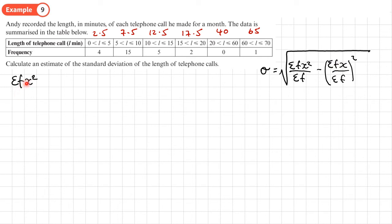Let's start with sum of FX². That's the sum of each frequency times the midpoint squared. So 4 × 2.5² + 15 × 7.5² + 5 × 12.5² + 2 × 17.5² + 0 × 40² + 1 × 65². Working that out on our calculator, we get 6,487.5.